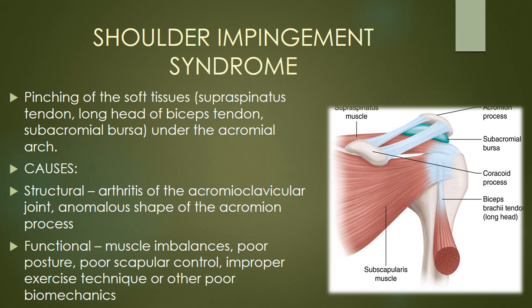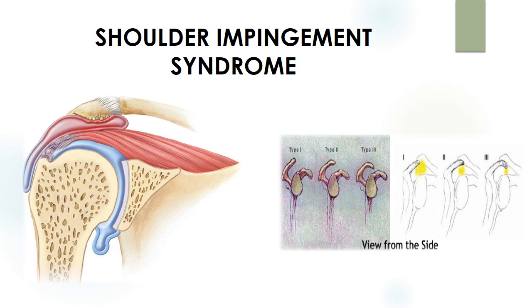Patients frequently cause themselves shoulder impingement syndrome due to lack of knowledge about proper shoulder mechanics and proper exercise technique to avoid impingement-type symptoms. This diagram shows both structural causes we talked about, depicting the space-occupying nature of subacromial arthritis and its narrowing impact upon tissues that pass underneath the acromion process.